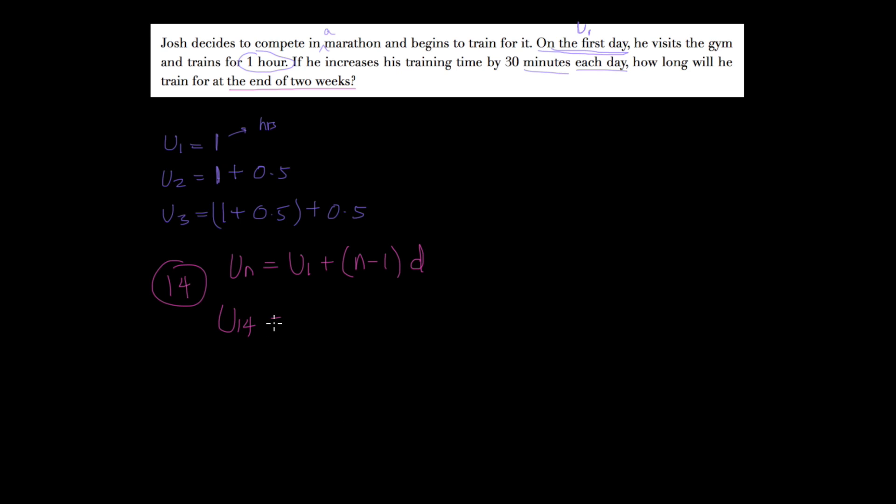So I have u sub 14 equals u sub 1. My u sub 1 is 1 hour, so 1 plus my common difference d is going to be 0.5 because that's what he increases his training time by each day. And my n is 14, so 14 minus 1 is going to give me 13. So u sub 14 equals 1 plus half of 13 is 6.5. So u sub 14 is 7.5 hours.